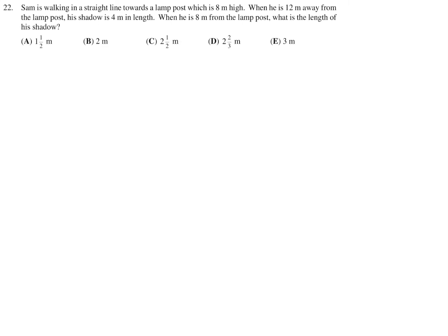Sam is walking in a straight line toward a lamppost, which is 8 meters high. When he is 12 meters away from the lamppost, his shadow is 4 meters in length. When he is 8 meters from the lamppost, what is the length of his shadow? So let's draw a diagram here. He is walking toward a lamppost, and the lamppost is 8 meters high. When he is 12 meters away, his shadow is 4.